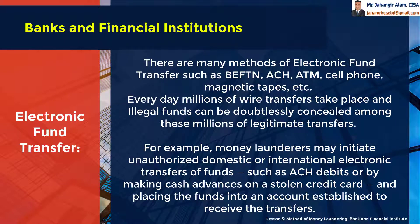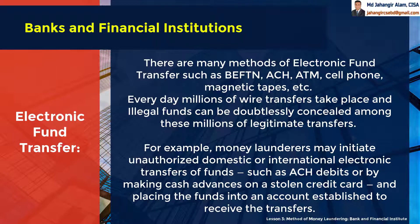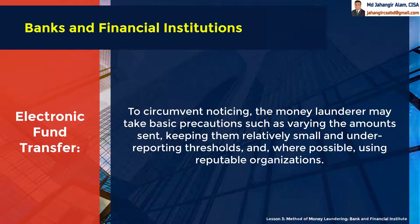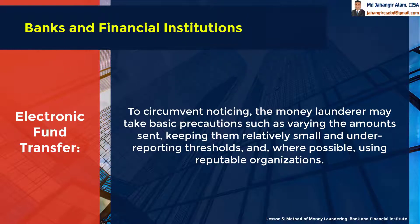For example, money launderers may initiate unauthorized domestic or international electronic transfers of funds, such as ACH debits, or by making cash advances onto a stolen credit card and placing the funds into an account established to receive the transfers. To circumvent detection, the money launderer may take basic precautions, such as varying the amounts sent, keeping them relatively small and under reporting thresholds, and where possible, using reputable organizations.